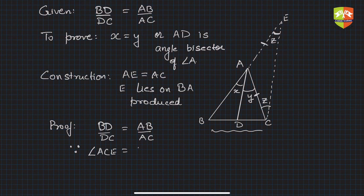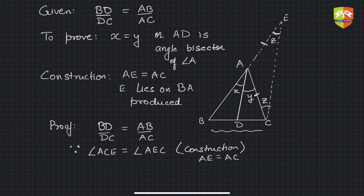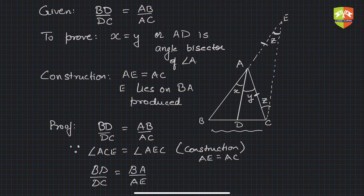Since AE equals AC by construction, angle ACE equals angle AEC. Therefore, instead of AC we can write AE. So BD upon DC is equal to BA upon AC, which equals BA upon AE, because AC equals AE.